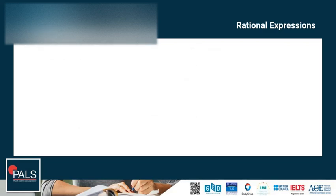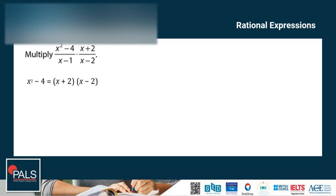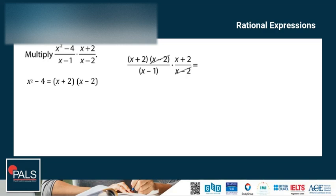Let's try another example. Before multiplying, notice that x squared minus 4 can be factored into x plus 2 and x minus 2. This means there are terms that can be cross-canceled — that should be your first step. We cross-cancel x minus 2, leaving x plus 2 over x minus 1 on the first rational expression and x plus 2 over 1 on the second. Then multiplying across, we have x squared plus 4x plus 4 over x minus 1.